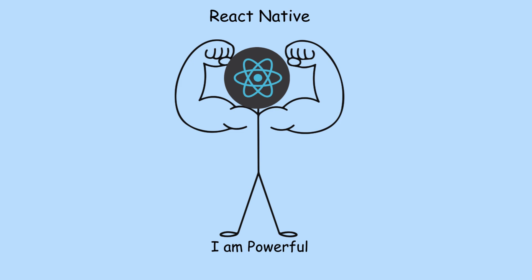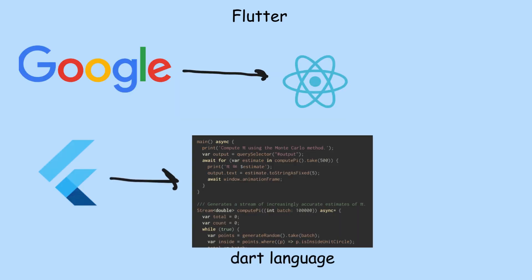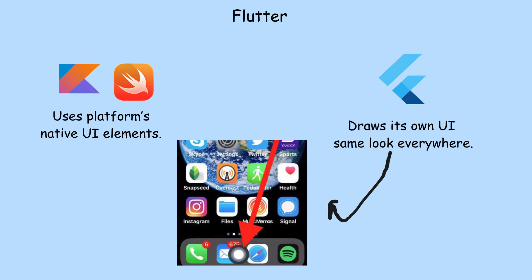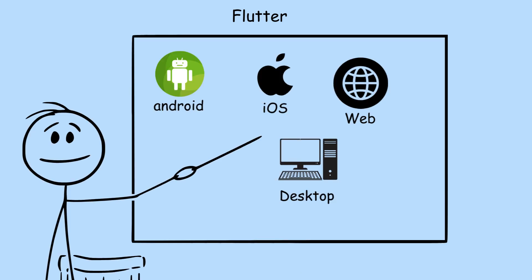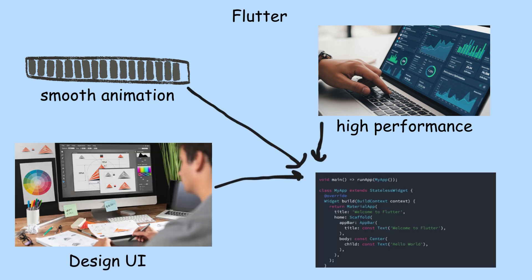Still, it's one of the most flexible options out there. Flutter. Google's answer to React Native, Flutter uses the Dart language. What makes Flutter different is that it doesn't rely on native UI components — it draws everything on screen by itself using its own rendering engine. That means your app looks exactly the same on Android, iOS, web, and even desktop. Smooth animations, high performance, and consistent design, all from one code base.